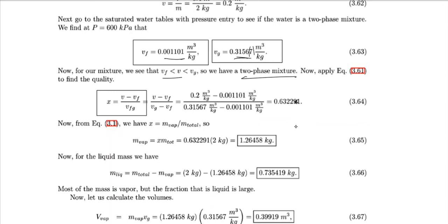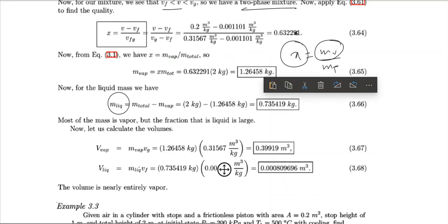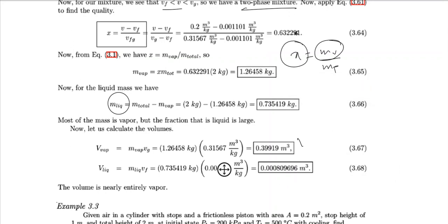Since quality x = mass of vapor / total mass, and total mass = 2 kg, the mass of vapor = x × 2 = 1.26458 kg. Mass of liquid = total mass − mass of vapor = 0.73542 kg. Volume of vapor = mass of vapor × vg, and volume of liquid = mass of liquid × vf, giving the total volumes of each phase.